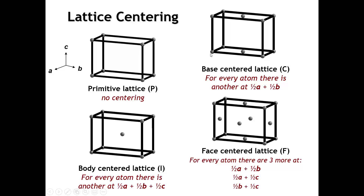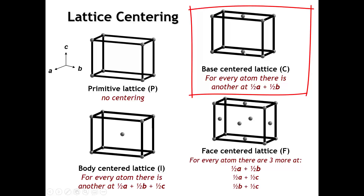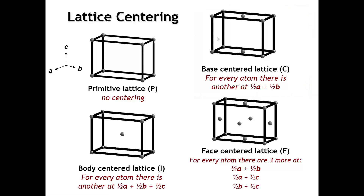We can also center by putting an equivalent lattice point at the center of two opposite faces — that's called a base-centered lattice. When the face that is centered is perpendicular to the C axis, defined by vectors A and B, this base-centered lattice is called a C-centered lattice. If we put the two centering lattice points in the face defined by A and C, perpendicular to the B axis, that would be called a B-centered lattice, and you can also have an A-centered lattice. In each of these cases — body-centered and base-centered — the volume of the centered unit cell must be twice as big as the volume of the primitive unit cell, because we have two lattice points per unit cell.